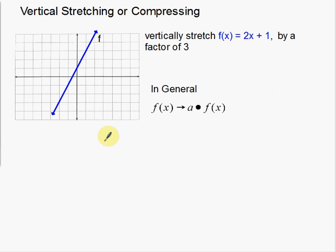Now let's do vertical stretching and compressing — it's very similar to what we just did but a little bit backwards. We're going to take the same function and vertically stretch it by a factor of 3. Let's find some points: negative 1, negative 1, and negative 2, negative 3. When we vertically stretch, vertical means up and down — that's our y-axis. So I'm going to take the y-coordinates and multiply them by a factor of 3.